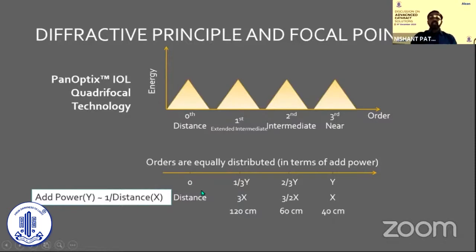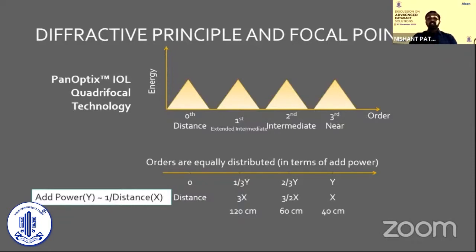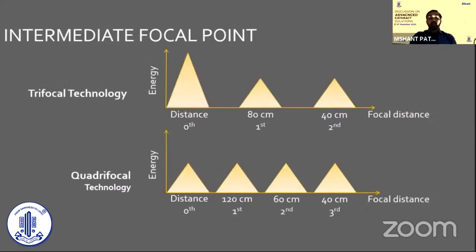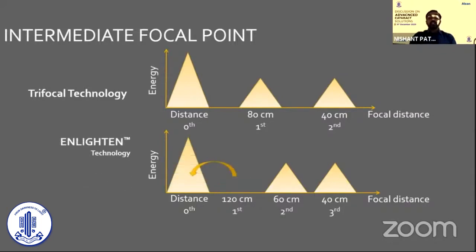With four focal points, light energy would be equally distributed at 25% each for near, intermediate, far intermediate, and distance. But equal distribution would compromise distance vision. So Alcon did something unique with what they call 'enlightened technology' — they knocked off the far intermediate focal point at 120 cm. What we have now is essentially a trifocal IOL with three focal points at 40 cm, 60 cm, and distance, with light energy distribution of 50% for distance, 25% for intermediate, and 25% for near.